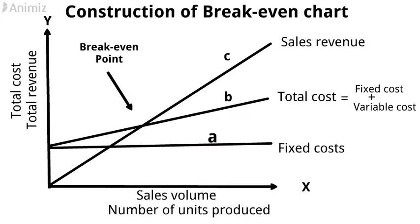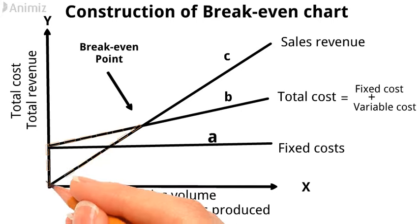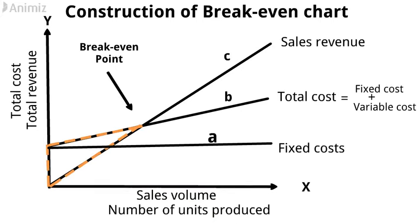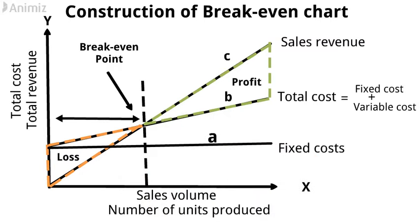This point is called the break-even point. The break-even point represents a no profit and no loss situation for a given volume of production. The area between the total cost line and total sales revenue line on the left side of the break-even point marks a loss to the concern. The area between the same lines on the right side of the break-even point represents profit. Profit comes only when more than this volume of output is reached, and profit increases at a faster rate than the increase of total costs.